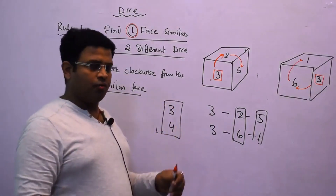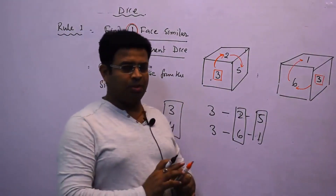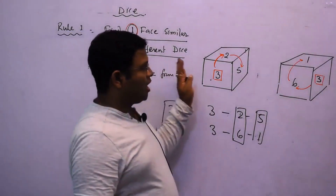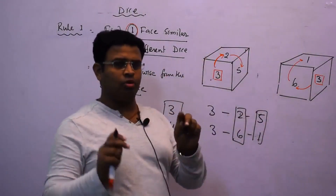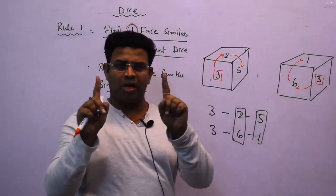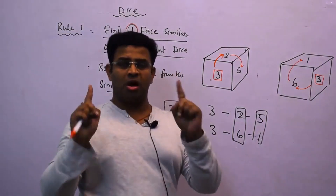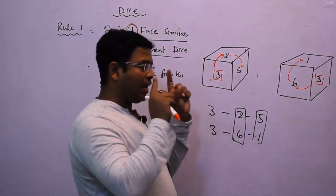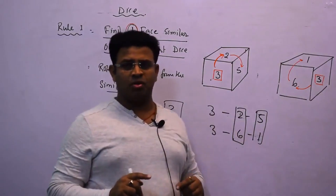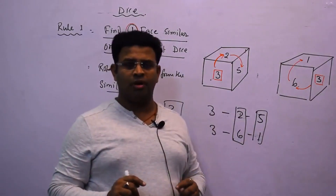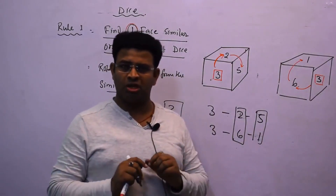Remember: if 4 or 5 different dice are given, it doesn't matter — you only need to take two dice that share one similar face, then rotate clockwise. With this method you can solve around 90 to 95 percent of dice questions easily.